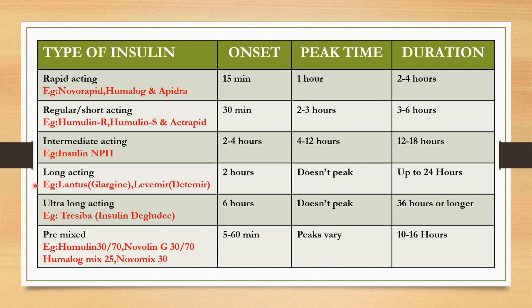Long-acting insulin has an onset of 2 hours. It doesn't peak and the duration is up to 24 hours, so this will control the blood sugar for a day. Ultra-long-acting insulin has an onset of 6 hours. It doesn't peak and the duration is 36 hours or longer.